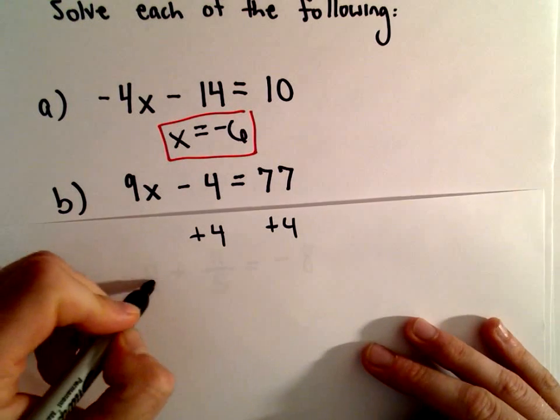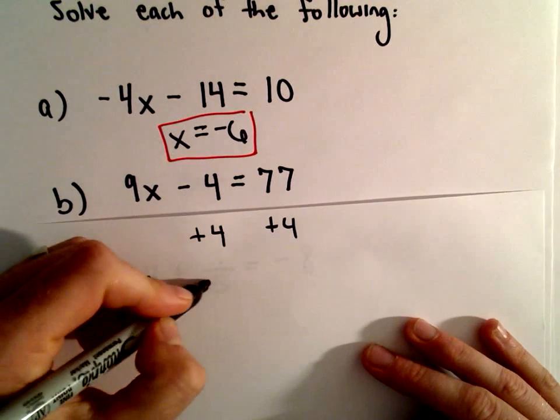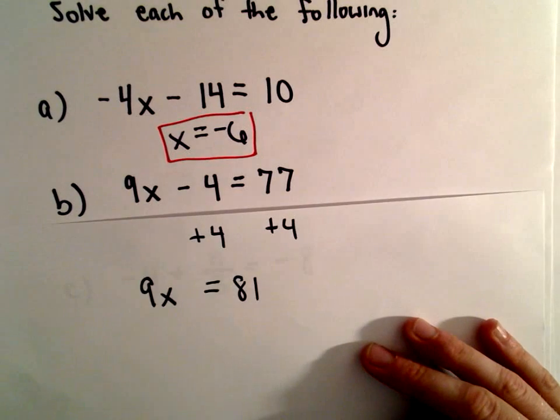So we'll be left with simply 9x on the left. Negative 4 plus 4 will be 0. There's our equal sign, 77 and 4 will give us 81.